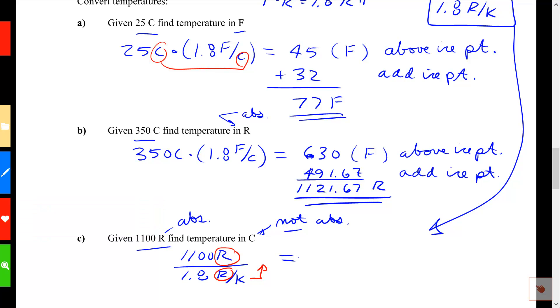So that's going to become, when I crunch the numbers, 1100 over 1.8 is 611.1, and that is indeed degrees Kelvin. Absolute. But I'm looking for a temperature in C, which is not absolute, so I have to subtract the ice point.